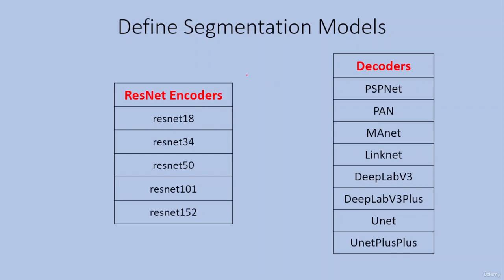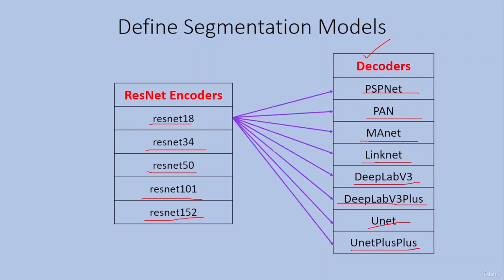We have already seen the ResNet encoders that are pre-trained on the ImageNet dataset: ResNet 18, ResNet 34, ResNet 50, ResNet 101, and ResNet 152. We have also seen the decoders available in the SMP library: PSPNet, PAN, MANet, LinkNet, DeepLab V3, DeepLab V3+, UNet, and UNet++. All encoders can be used with all decoders.